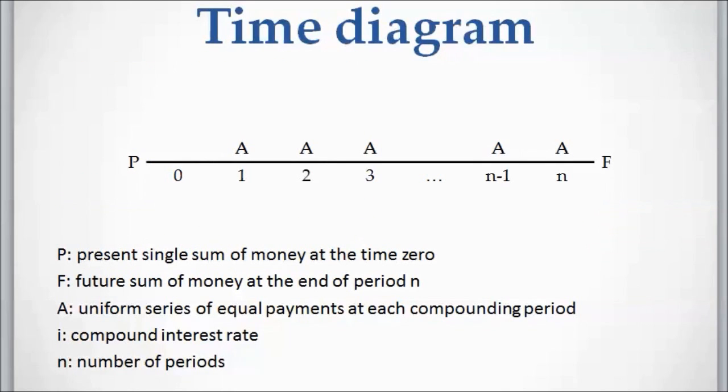The next step in approaching the problem is to draw the timeline. Here, as you can see, the horizontal line represents the time. The left hand end shows the present time and the right hand end shows the future. Numbers below the line—zero, one, two, three, and n—are time periods.